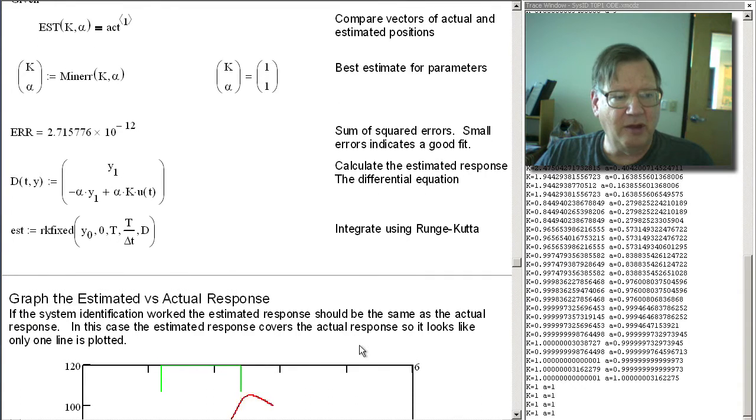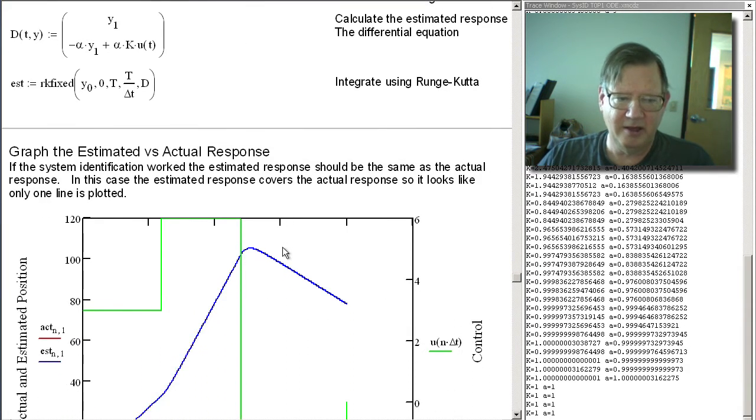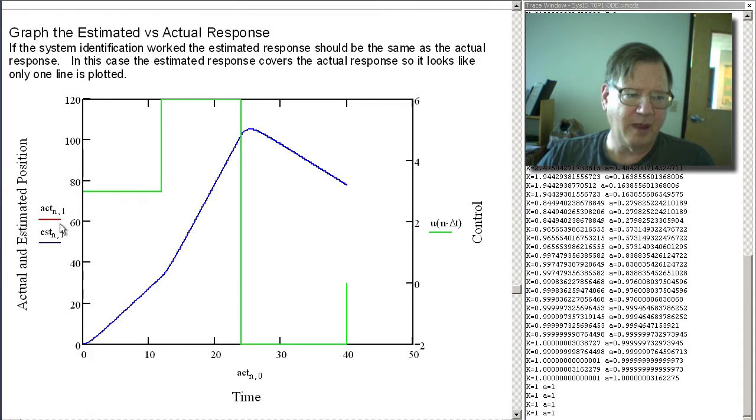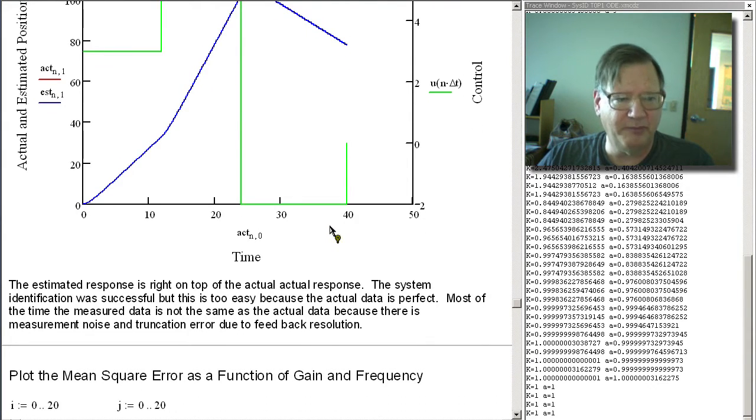Now what I want to do is compare my estimated with my actual. And because I've got exactly the same parameters, you can see that my actual and estimated are the same line. The estimated, because I plot that second, covers the actual. So that indicates that my system identification is perfect.